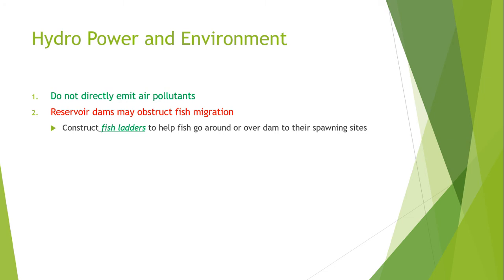Reservoir dams may obstruct fish migration. Constructing fish ladders to help fish pass over the dam to their spawning sites is important. One example of this involves salmon fish.